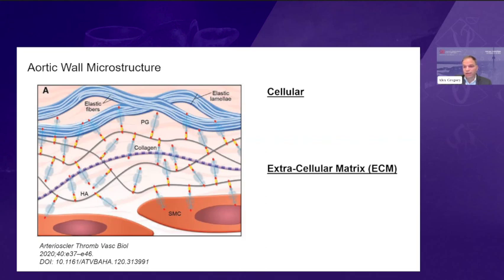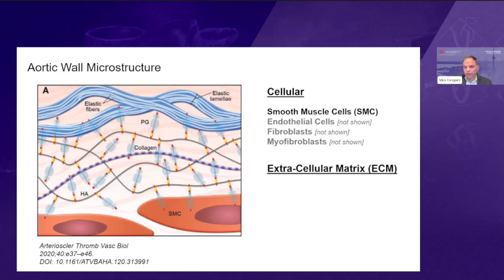The microstructure can be divided into the cellular and the non-cellular components. Focusing on the main ones in the literature: the smooth muscle cells have both secretion and mechanical function. The endothelial cells on the inner layer contribute with communication into the media, particularly through crosslinks with smooth muscle cells, and they also provide some of the viscoelastic properties of the aorta.